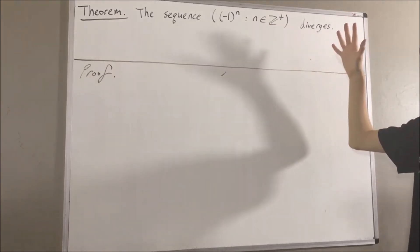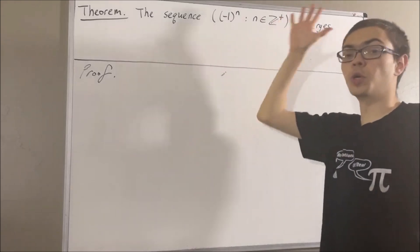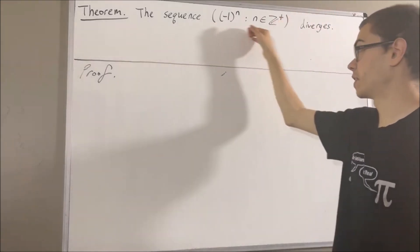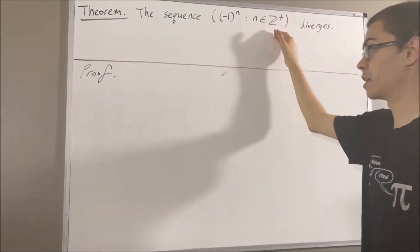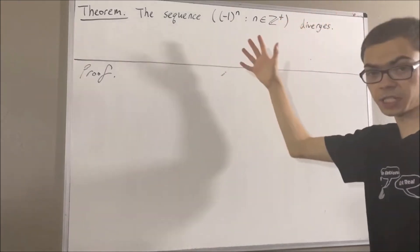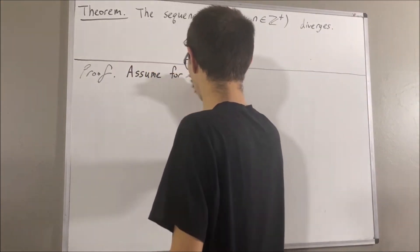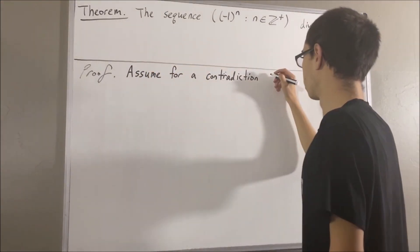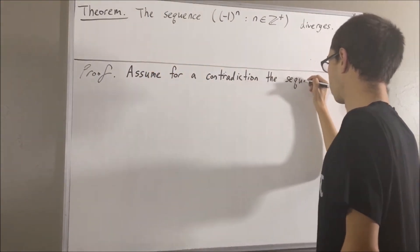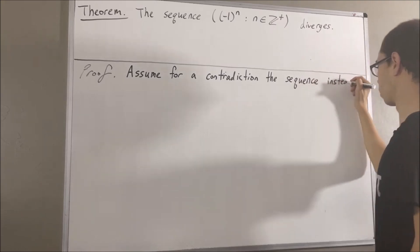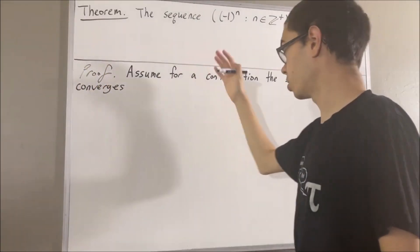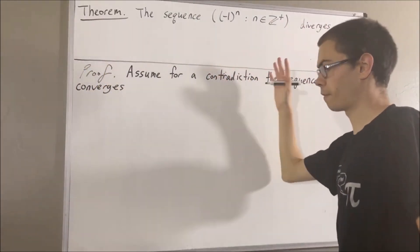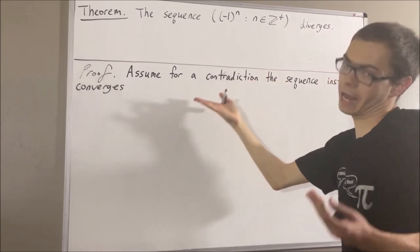Now, to prove this theorem, we are going to assume for a contradiction that this sequence instead converges. We'll say that the sequence converges to the value x.